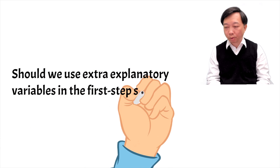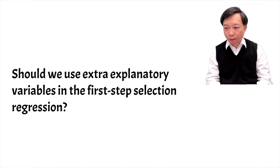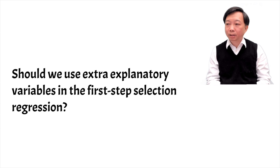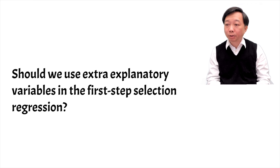Should we use extra explanatory variables in the first step selection regression? The prediction from the selection regression is a function of the explanatory variables in the first step. If the explanatory variables in the second step outcome regression are the same as those in the first step selection regression, then the inverse Mills ratio or the predicted probability of working will be highly collinear with the explanatory variables in the outcome regression. This leads to large standard errors and imprecise estimates. Therefore, it is better to have extra regressors in the first step selection regression to avoid the multicollinearity problem.